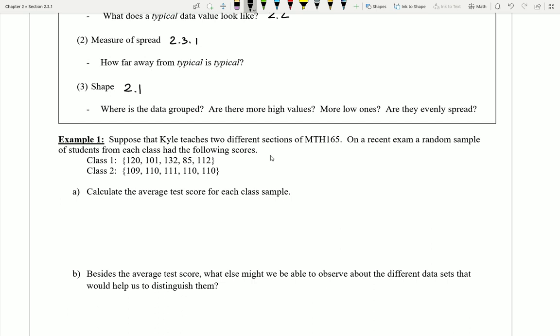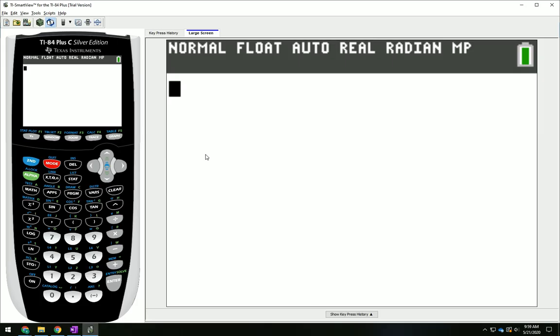Now I should be able to go ahead and easily calculate an average test score for each class sample. So I'm going to remember that since I have a sample, I have a particular symbol for my average. I have an X bar. Now I'm going to write two different X bars here, and I'm going to separate them or distinguish them with a little subscript so that number one stands for class number one, and number two stands for class number two. Now of course I'd like to be able to compute these averages, and I can do that in one of two ways. I could just take all these numbers, add them together, and divide by five, or of course I could go to my calculator.